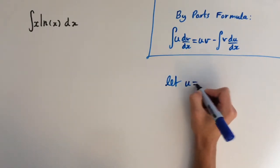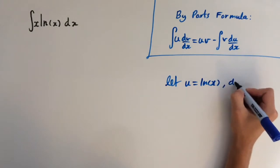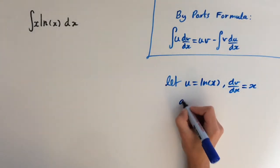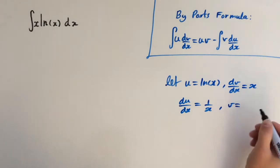So we're going to let u equal ln of x and dv/dx equal x. So now du/dx, when we differentiate this, gets 1 over x, and v, the integral of x, equals x squared over 2.